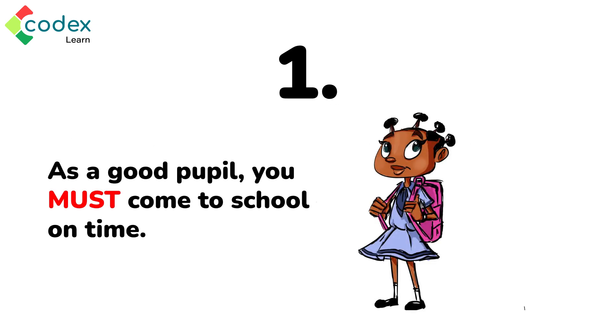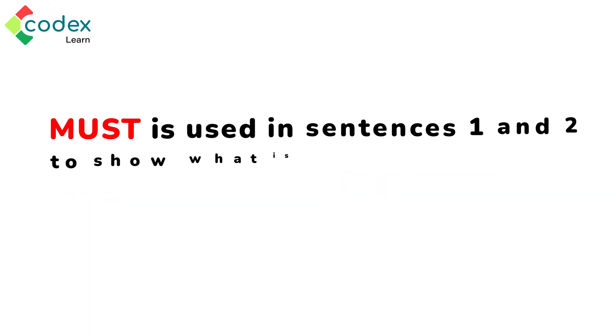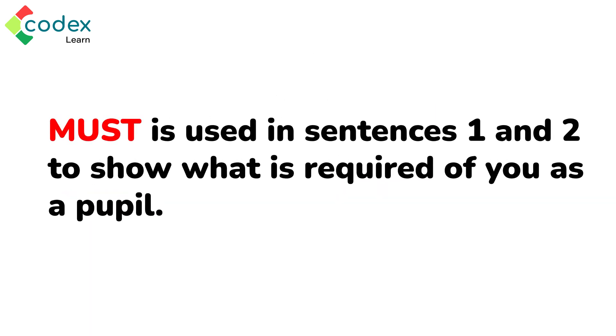One, as a good pupil you must come to school on time. Two, as a good child you must obey your parents. Must is used in sentences one and two to show what is required of you as a pupil.